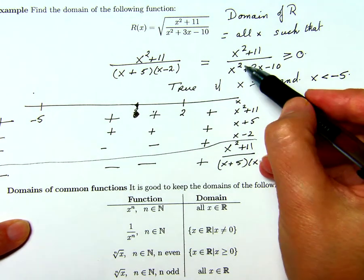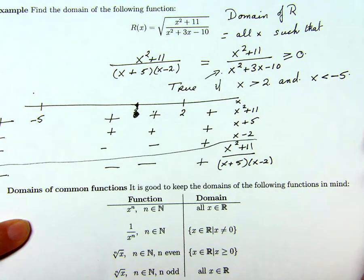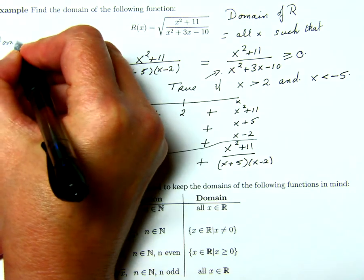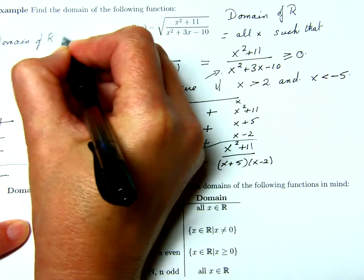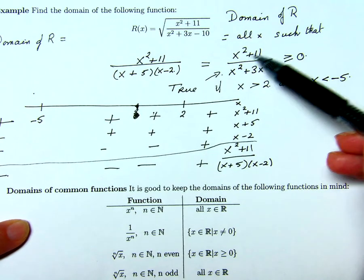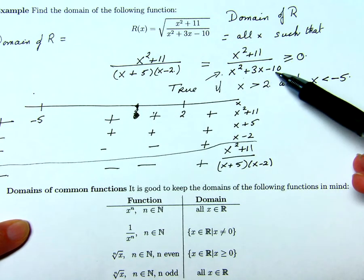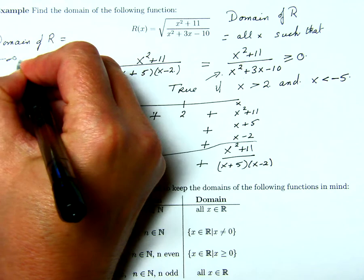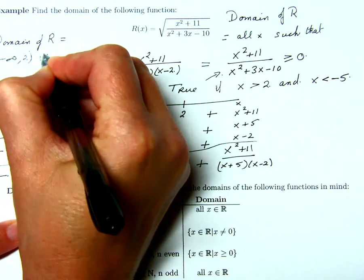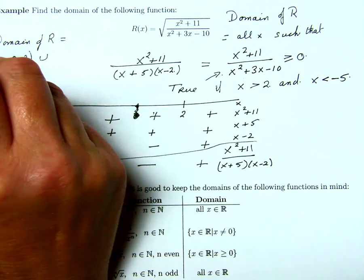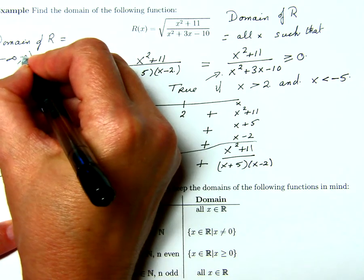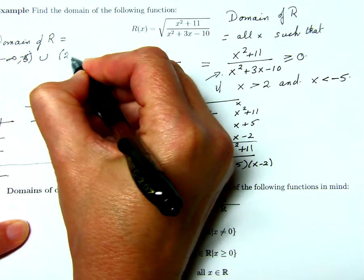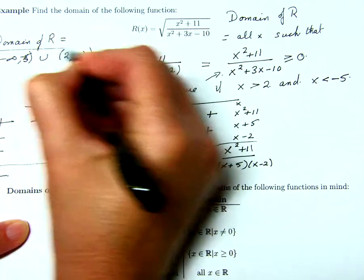So the domain, so this is true in these two intervals, so the domain of r is all x such that x squared plus 11 over x squared plus 3x minus 10 is greater than or equal to zero, and that's all x in the intervals from minus infinity to 2, not including 2, along with, sorry, from minus infinity to negative 5, not including negative 5, along with everything bigger than 2, 2 to infinity, and that's my domain.